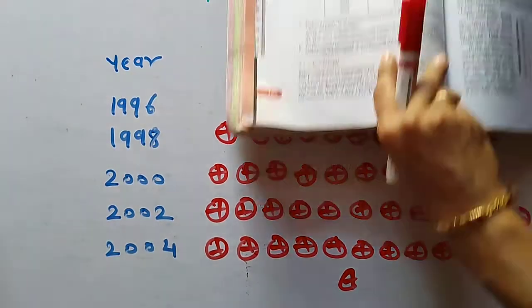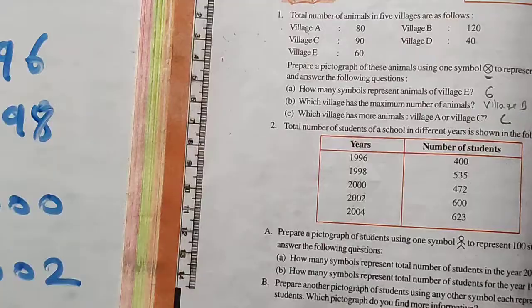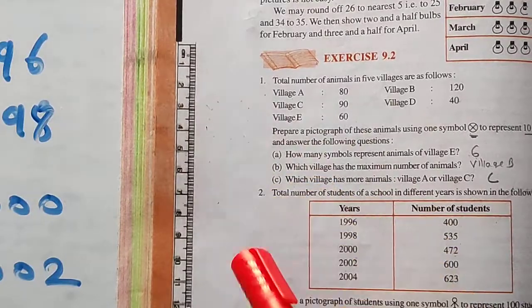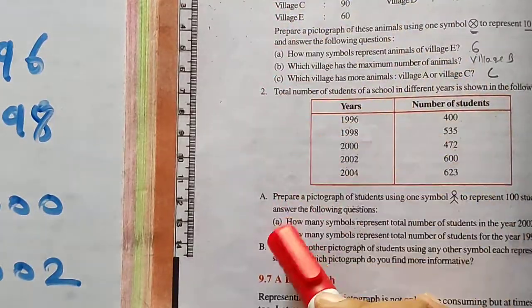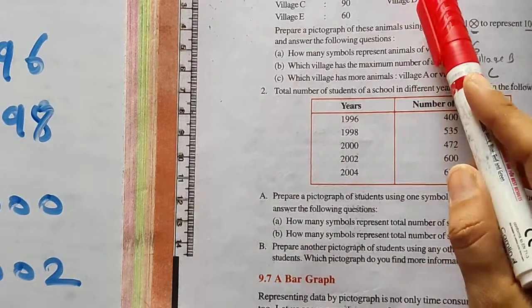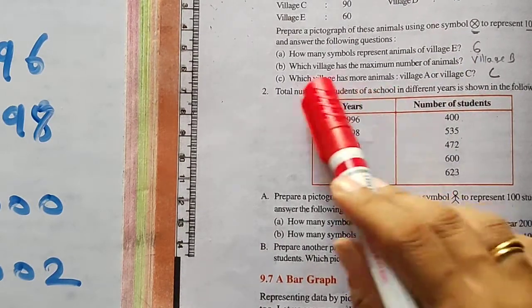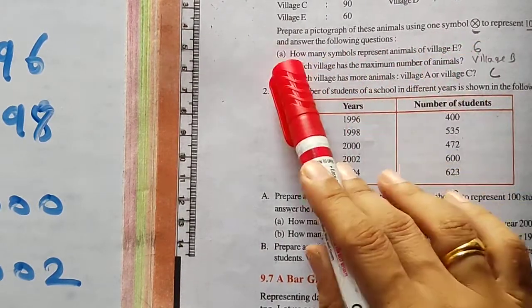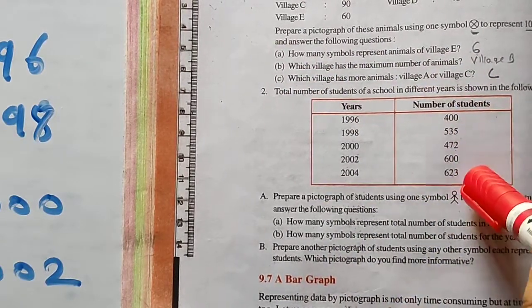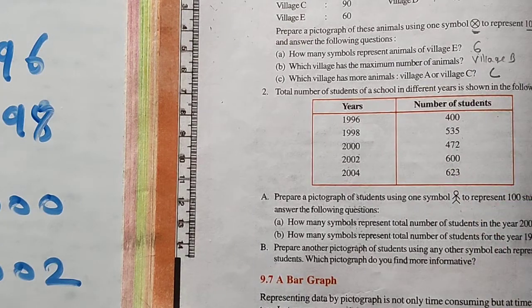In this way, you have to complete exercise 9.2 in your notebook. Write all questions — question 1 and question 2. You have to draw three pictographs and copy the questions and solve them in your notebook. This is your today's homework: exercise 9.2. Thank you.